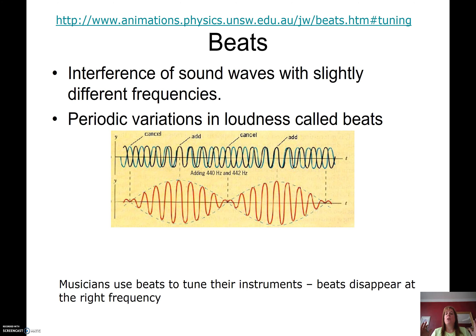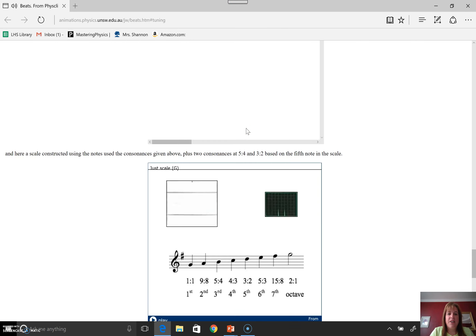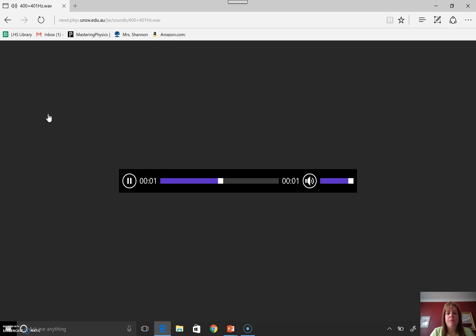The last thing I want to talk about is what are called beats. Beats are interference in sound waves that have slightly different frequencies. When we put frequencies that are off by just a couple of hertz together, what you hear is a variation in loudness. The number of beats you hear is the difference between the frequencies. For example, a frequency of 440 hertz and one of 442 hertz — there are places where I get complete destructive interference and places where I get constructive interference. Let's see what one beat per second sounds like — that means they're off by one hertz.